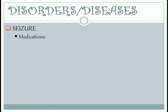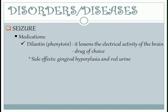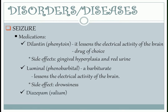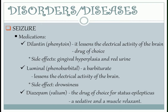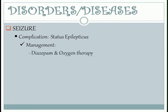Medications: First, we have Dilantin — it lessens the electrical activity of the brain and it is the drug of choice. Side effects include gingival hyperplasia and red urine. Second, we have Diluminal — it is a barbiturate that can also lessen the electrical activity of the brain, but the side effect is drowsiness. Lastly, we have Diazepam — it is the drug of choice for status epilepticus, and it is a sedative and muscle relaxant. Complications of seizure: status epilepticus is a tonic phase that could last for more than one minute, which can cause severe hypoxia resulting in brain damage. Management includes Diazepam via IM and oxygen therapy.